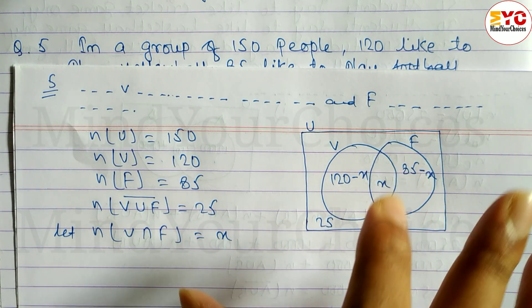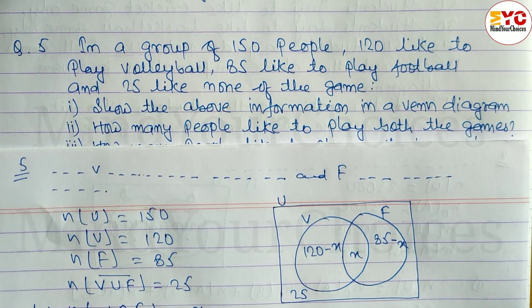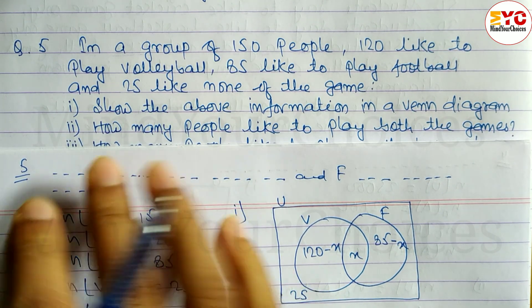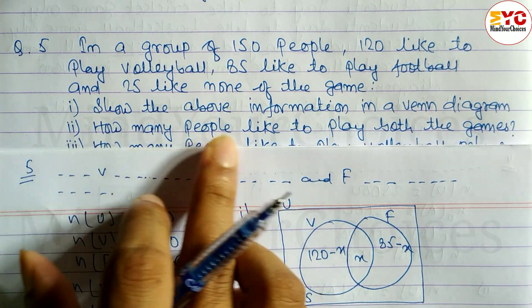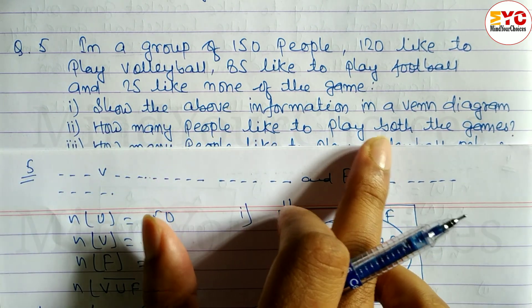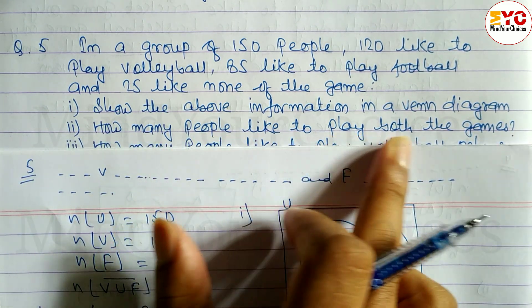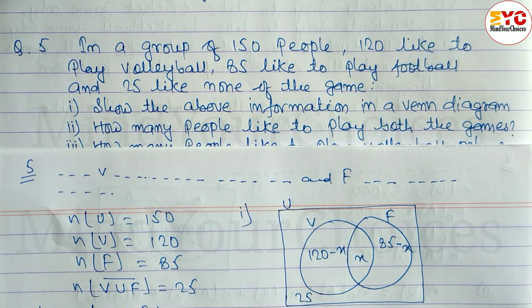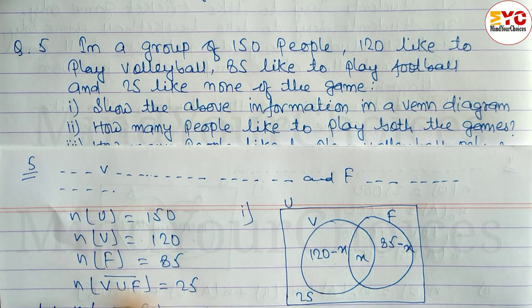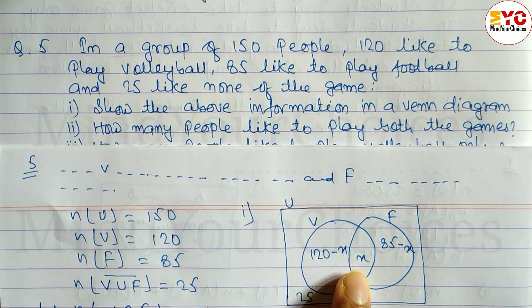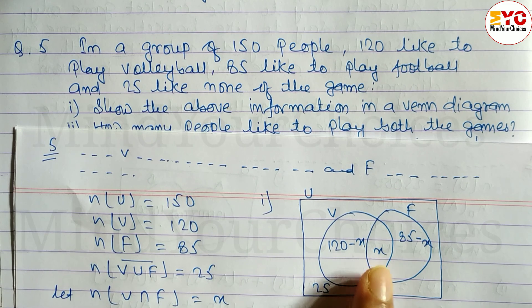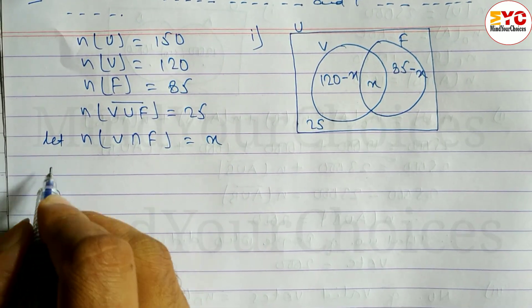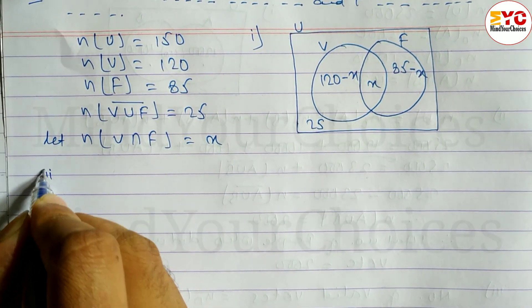Up to here, you should understand number 1. For number 2, how many people like to play both the games? We need to find the intersection — that means finding the value of X. In number 2, we use the N(U) formula.